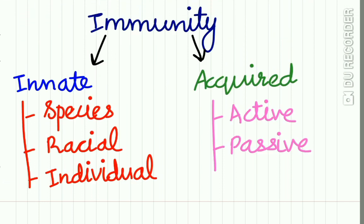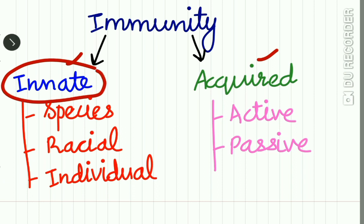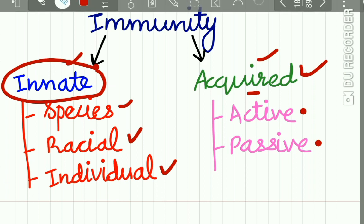Immunity is of two types: innate immunity and acquired immunity. The word innate means inborn — the inborn immunity in an individual — while acquired immunity is developed by an individual. The innate immunity is again of three types: species immunity, racial immunity, and individual immunity. The acquired immunity is of two types: active acquired immunity and passive acquired immunity.